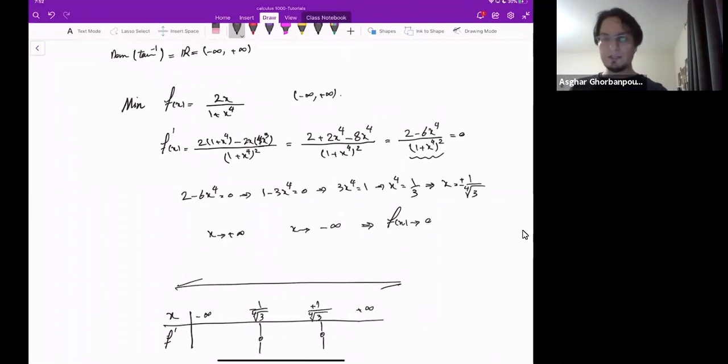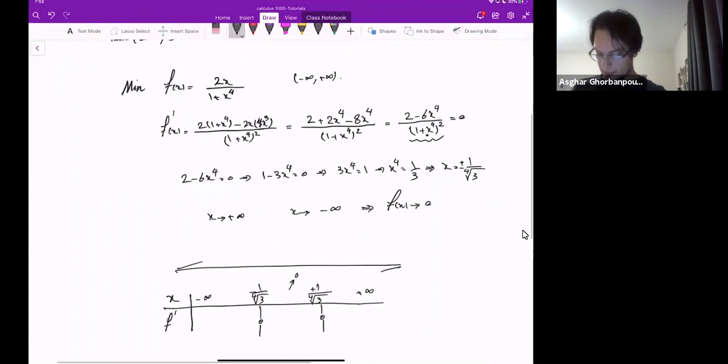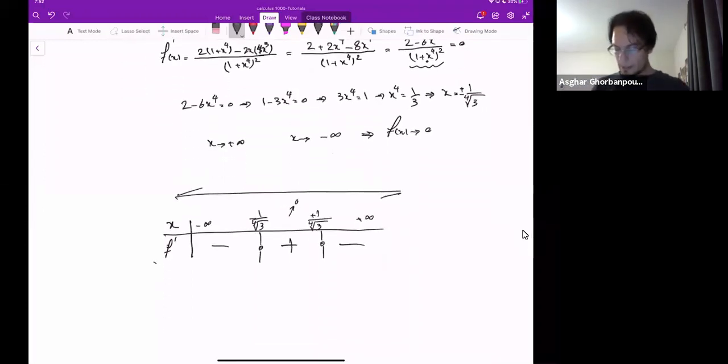f prime is - the denominator is always positive. In the numerator, if I plug in some number in between like zero there, it will give me positive number. As x grows to plus infinity, this will be minus.